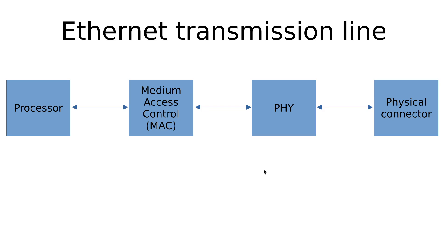Here on this slide you can see a typical Ethernet transmission line. We have four major components. On the left hand side we have a processor, which does all the computing we need. Then we have a medium access control or MAC, which gets data from the processor and splits it into various frames.